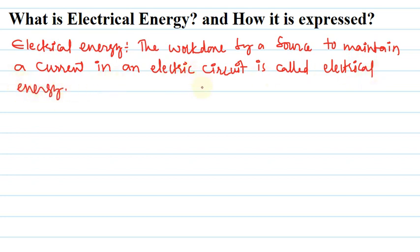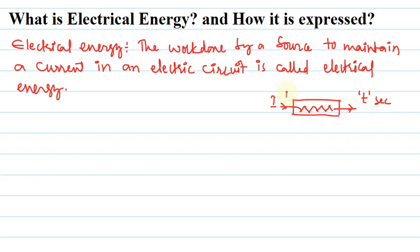Now let us see how electrical energy can be expressed. Let us consider an electric circuit through which a charge Q flows under a potential difference of V. Consider an electric circuit which has an electrical component like an electric bulb, and this electric bulb has a resistor in it. Through this resistor a current I flows for a time of T seconds. A and B are the terminals of this electrical appliance and the potential difference across these terminals, let us consider it as V.